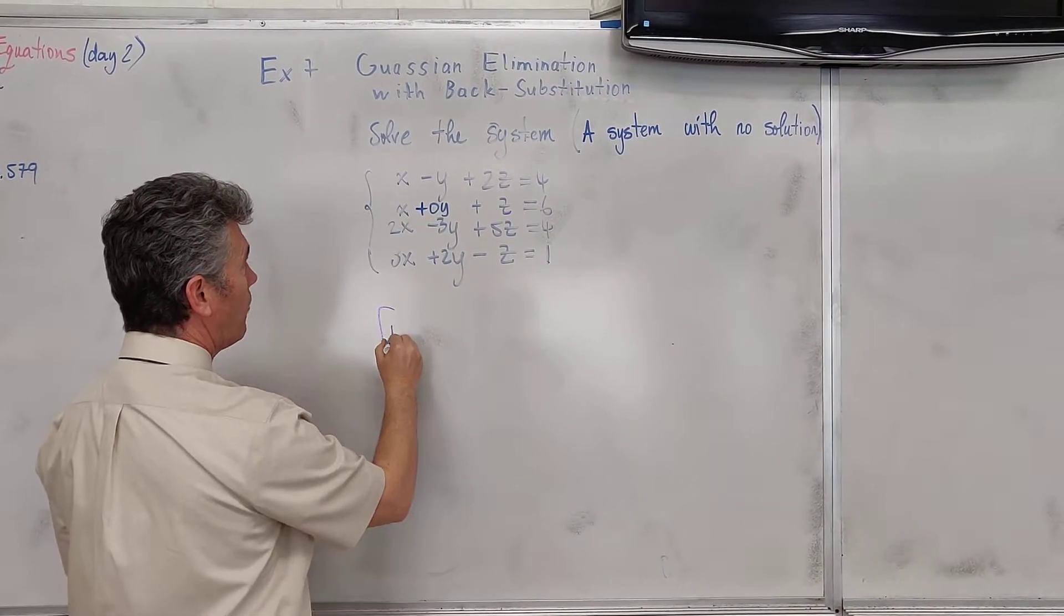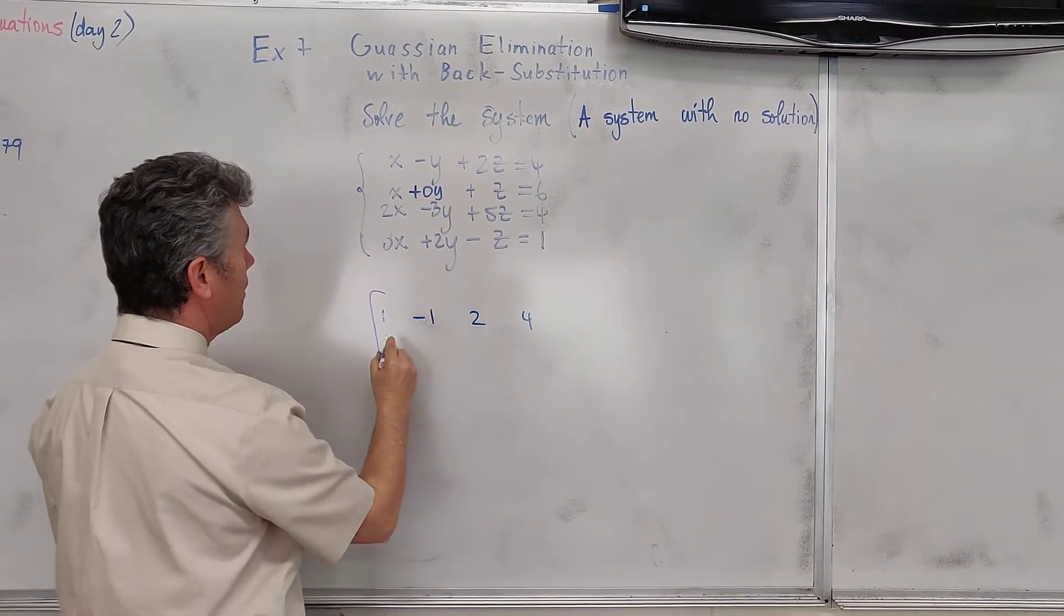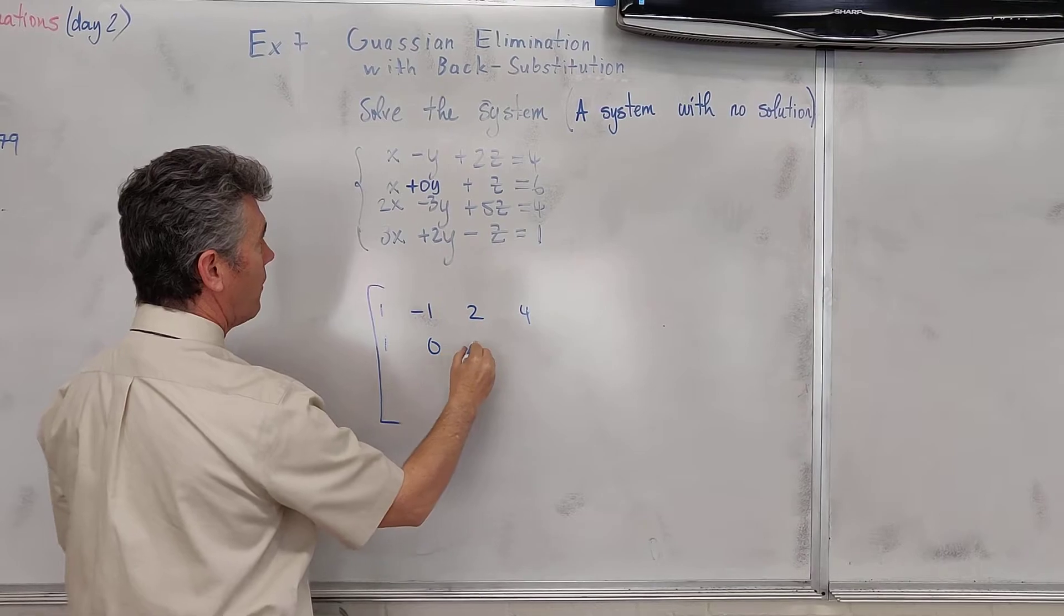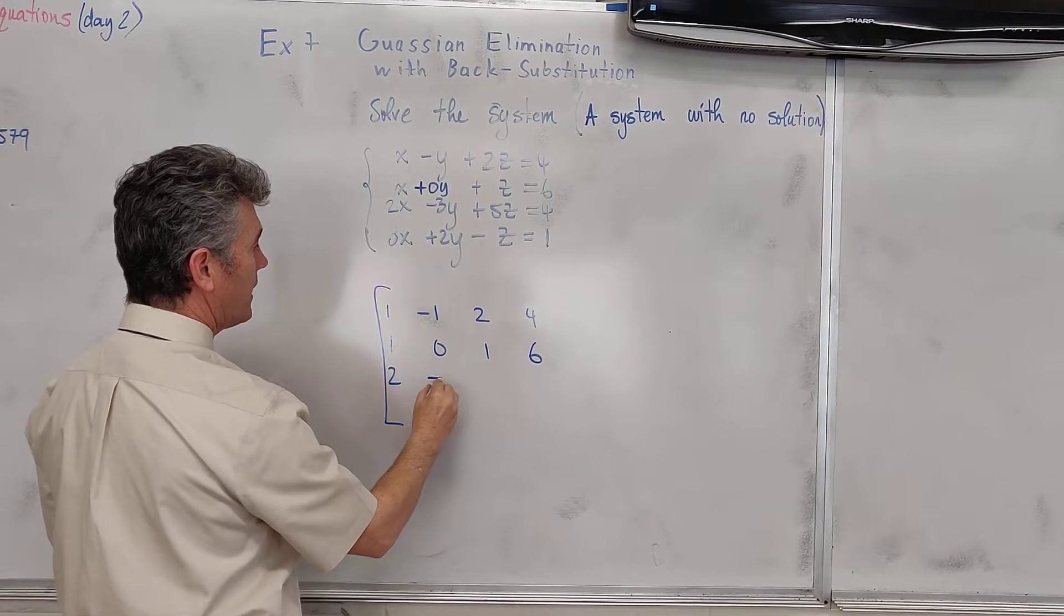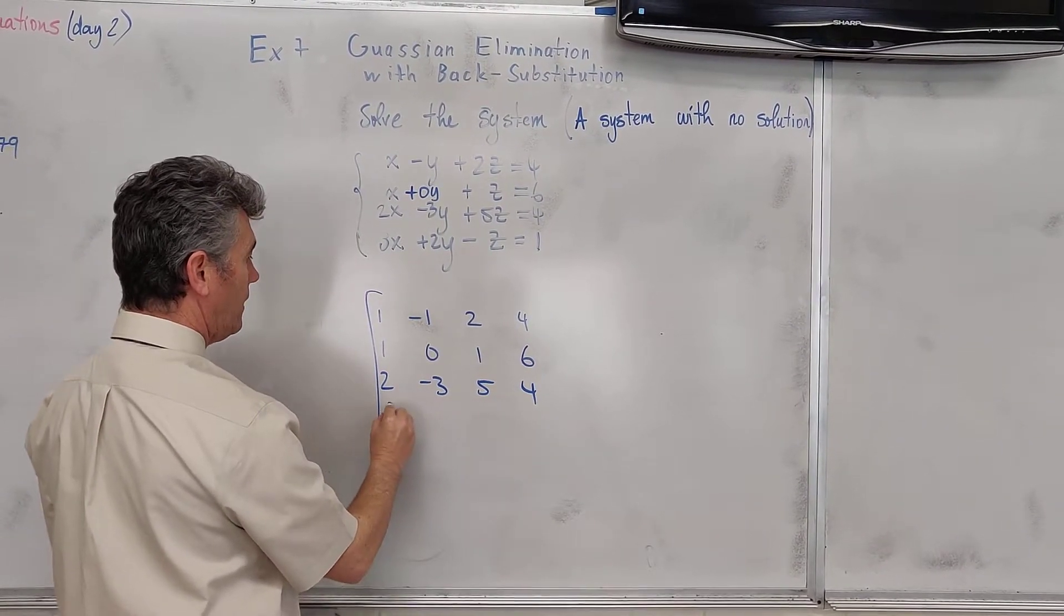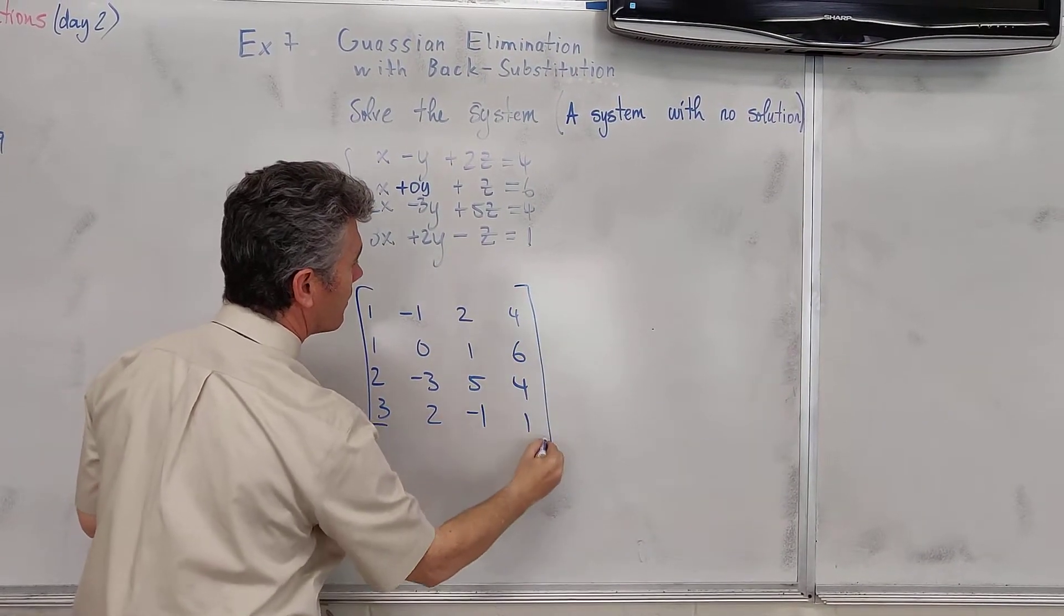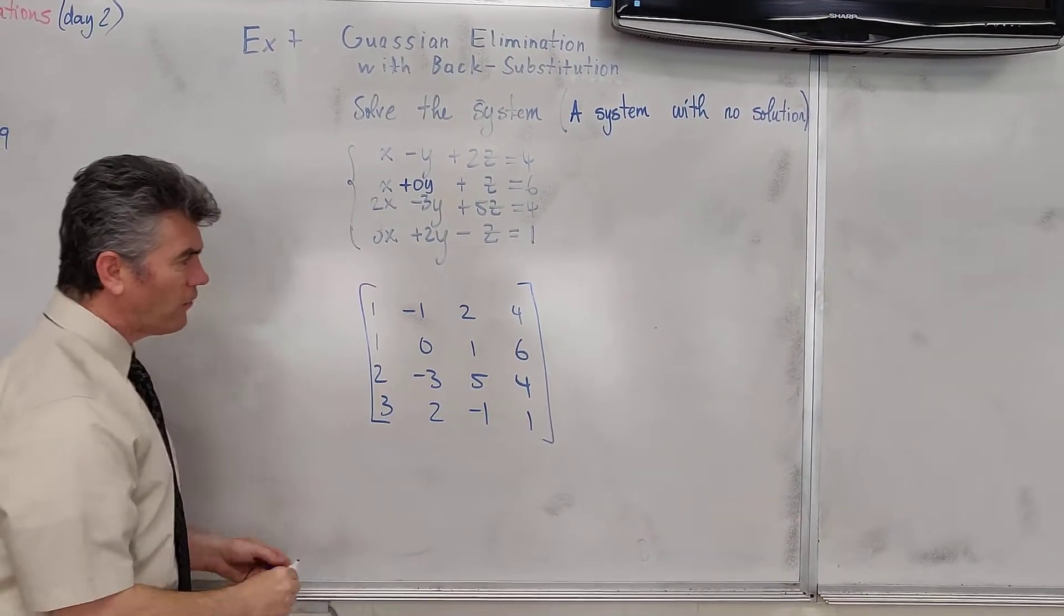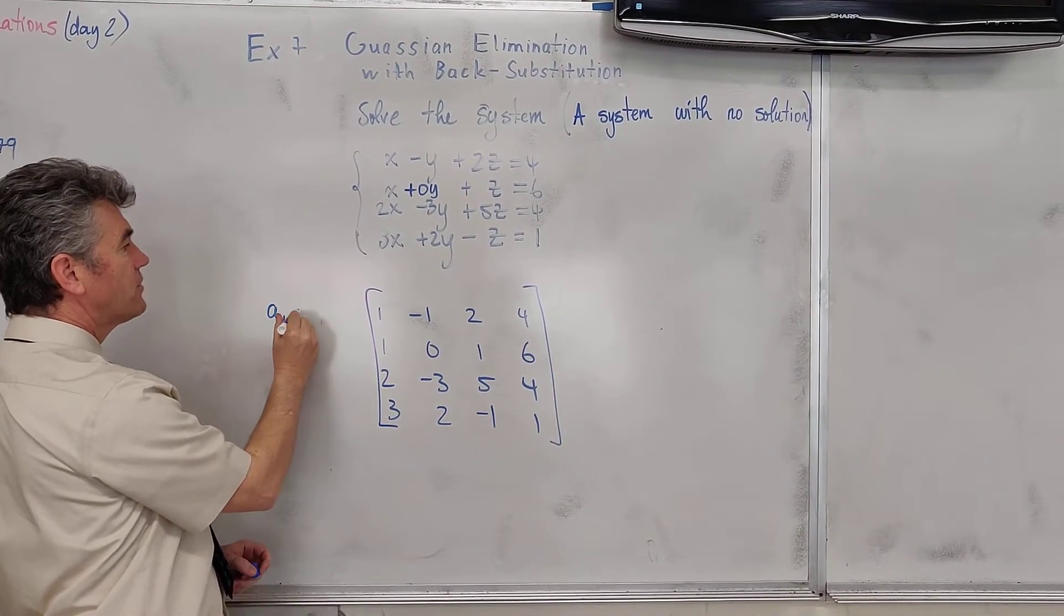There we go. 1, negative 1, 2 and 4. 1, 0, 1, 6. 2, negative 3, 5 and 4. And finally 3, 2, negative 1 and 1. First goal: Achieve the first entry in the first row equal to 1.